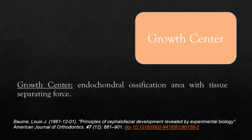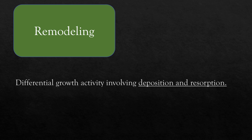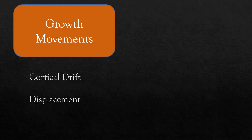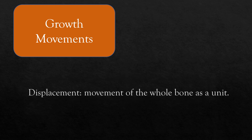Bone described the growth center as an area in which endochondral ossification occurs, serving for a sufficient length of time and resulting in a huge growth contribution increasing the bone mass. Remodeling is defined as differential growth activity involving deposition and resorption. There are primarily two types of growth movements. Cortical drift is the movement towards the depository surface by a combination of resorption and deposition.